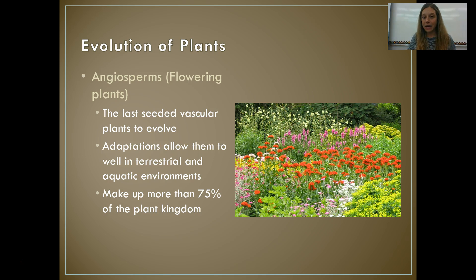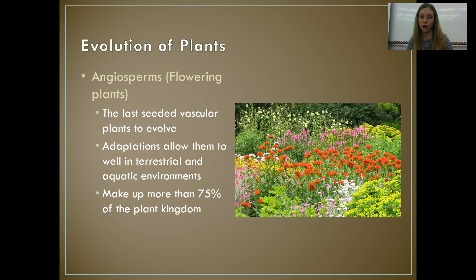Then came our final step in plant evolution: the evolution of the flower. These are angiosperms — whenever you hear that term, think of flowers, because these are flowering plants. They were the last seeded vascular plants to evolve. This adaptation — being able to produce a flower and carry seeds in flowers — allowed them to live well in both terrestrial and aquatic environments. Because this is such a great adaptation, angiosperms make up about 75% of the plant kingdom.